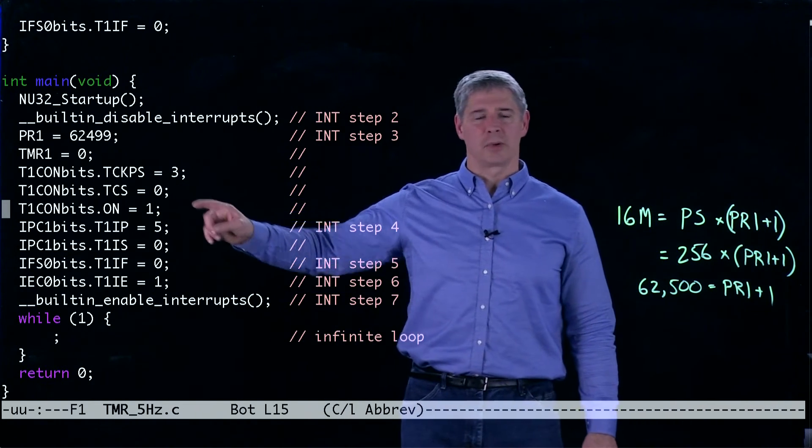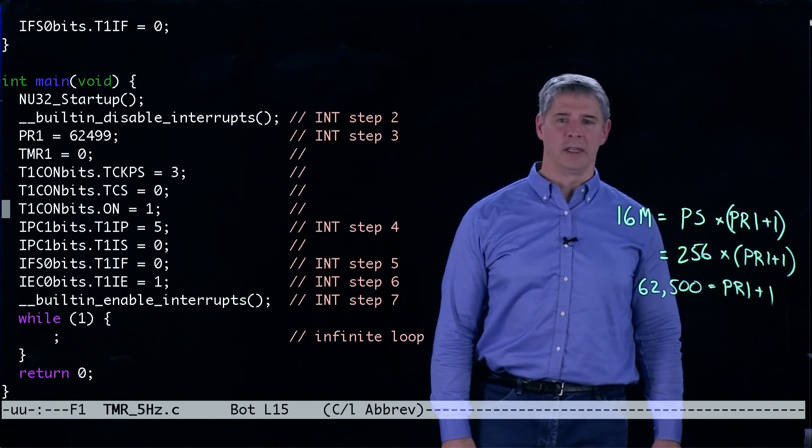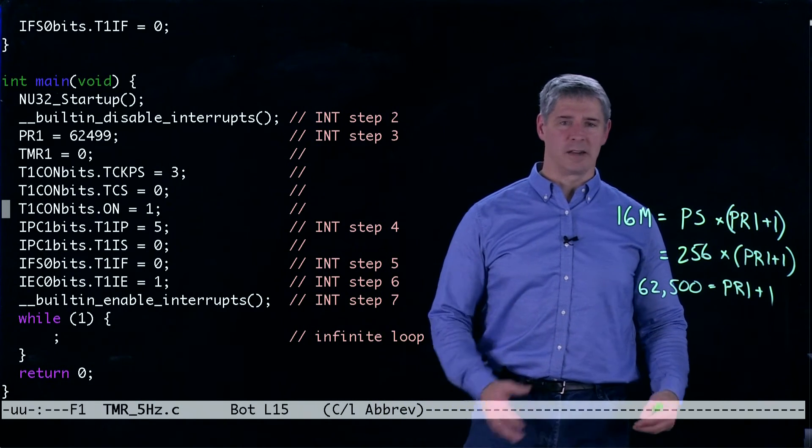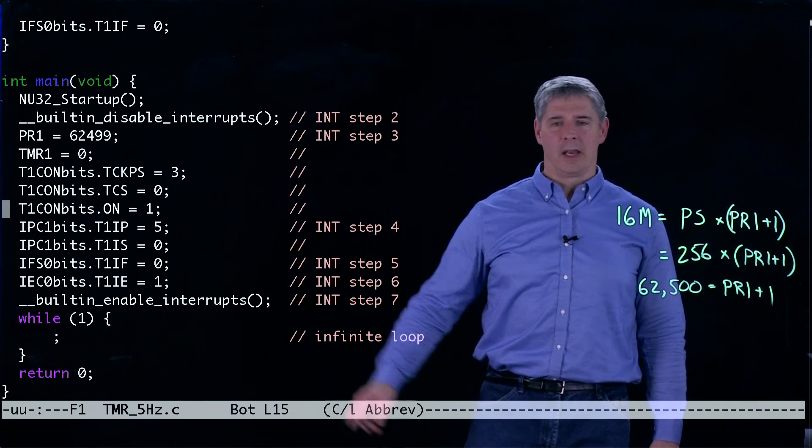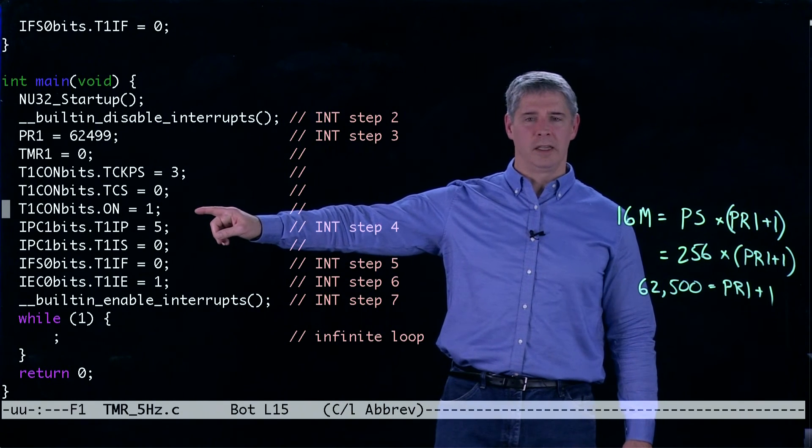We're going to choose the clock source for timer1 to be the peripheral bus clock instead of an external input. And now we're going to turn on timer1.